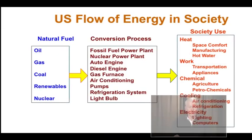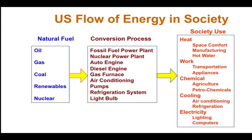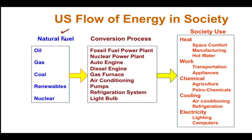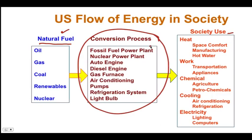Let's break that conversion process down a little bit further. On the left here, we have the natural forms of energy that we find in their natural state. And we have the society uses that we want to make life more comfortable: heat and work, chemical energy, cooling energy, and electricity. Now let's talk about the energy conversion process — the devices, the infrastructure, the equipment that's necessary to convert energy from one form to the other.